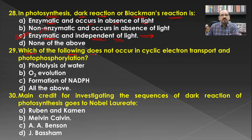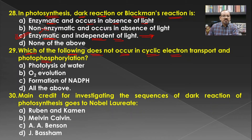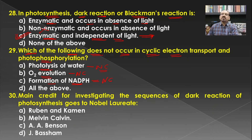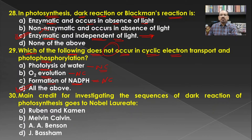Which of the following does not occur in cyclic electron transport and photophosphorylation? Photolysis of water is a characteristic feature of non-cyclic photophosphorylation, not cyclic. Evolution of O₂ is also characteristic of non-cyclic photophosphorylation. Formation of NADPH is also a characteristic feature of non-cyclic electron transport. Hence all of the above do not occur in cyclic photophosphorylation, and all of the above is the answer.